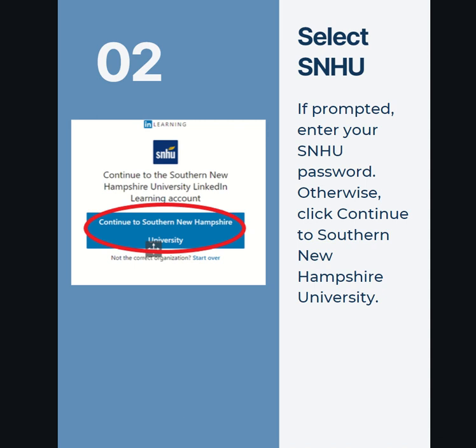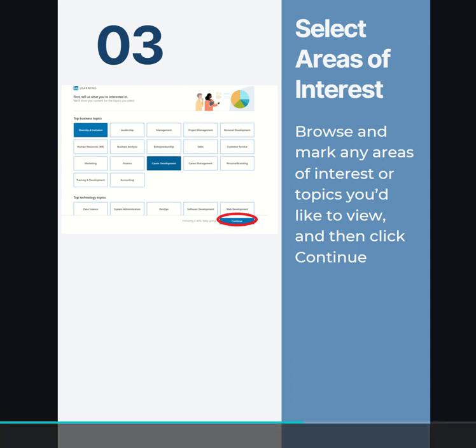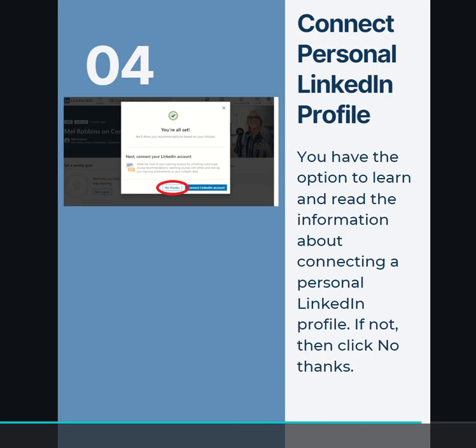Otherwise, click Continue to Southern New Hampshire University. Step three: select areas of interest. Browse and mark any areas of interest or topics you'd like to view, and then click Continue.